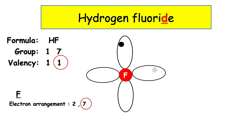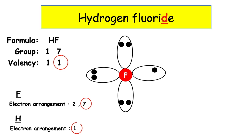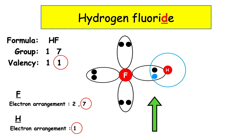We pop in the electrons, remembering that the electrons sit singly before they double up. Hydrogen has the electron arrangement 1. The electrons are found in the first energy level, which means we are going to draw a circle. We need to make sure that circle overlaps the unpaired electron of the fluorine atom, and we pop in the one electron that hydrogen has. In the overlap, we have a shared pair of electrons, which represents our covalent bond.